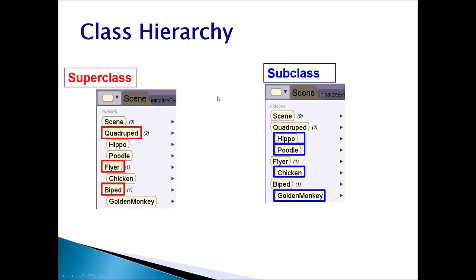When we talk about class hierarchy, when you open up your Alice and create procedures, you will drop this class menu down. In your world you will have some objects. When you take a look at the classes, you can see which is a superclass and which is a subclass. The ones highlighted in red — quadruped, flyer, biped — are superclasses. Under quadruped, we have hippo and poodle, and they are the subclass for quadruped. Chicken is a subclass for flyer. Golden monkey is a subclass for biped.